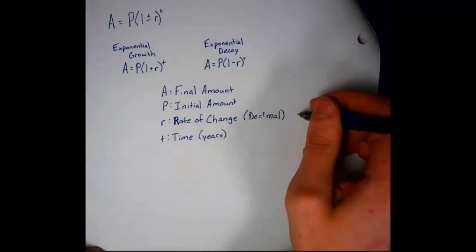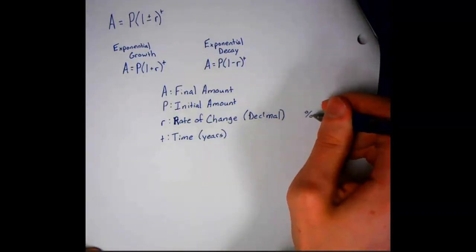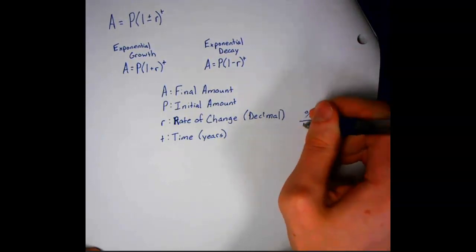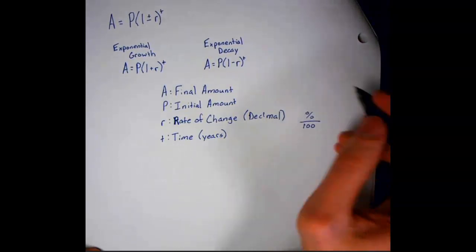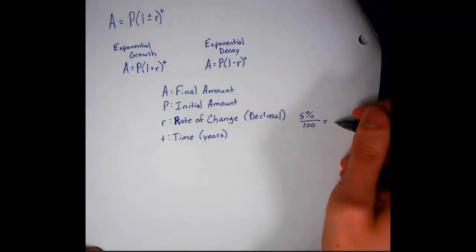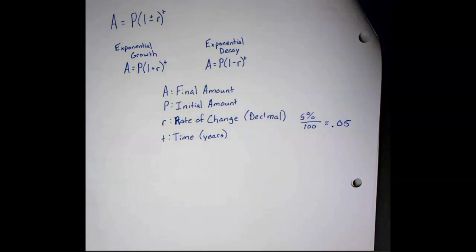So if they give you a percent, we're just going to divide it by 100. So if we had 5%, then we have 0.05. And T is going to be the time in years.